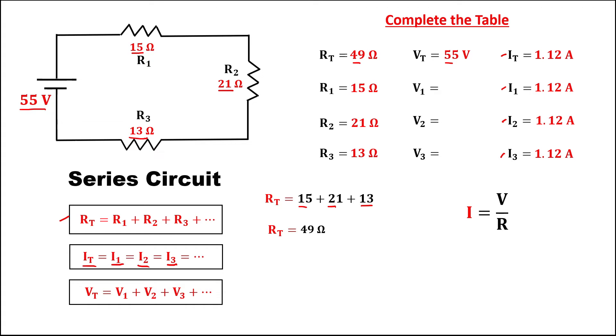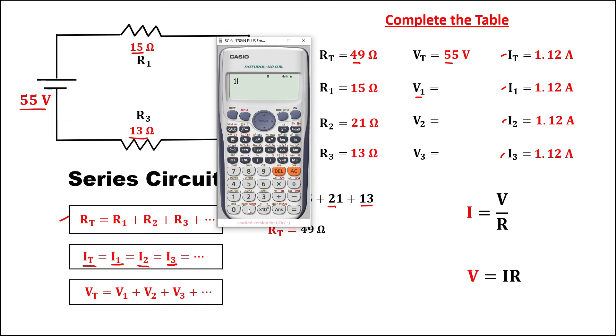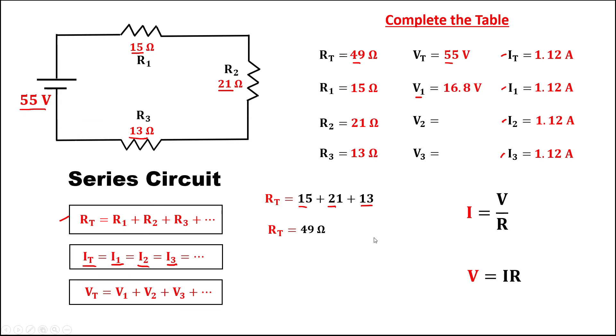To find all the voltages, since the formula to find the voltage is equal to the current times the resistance, for voltage 1, we have 1.12 then times this 15 ohms, equals, so the voltage is 16.8 volts.